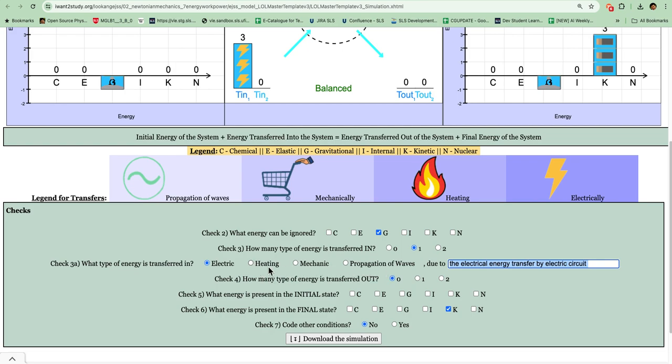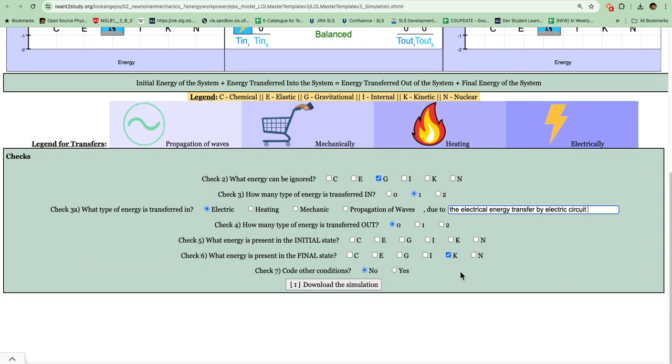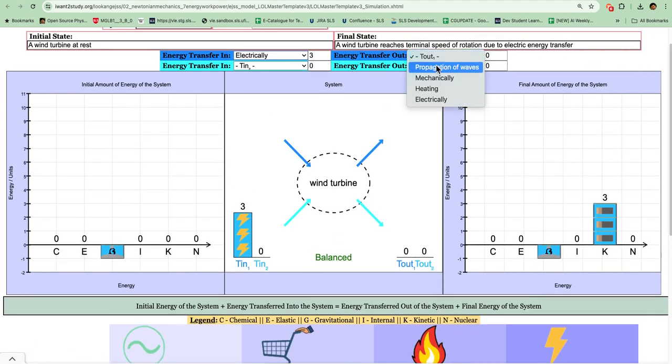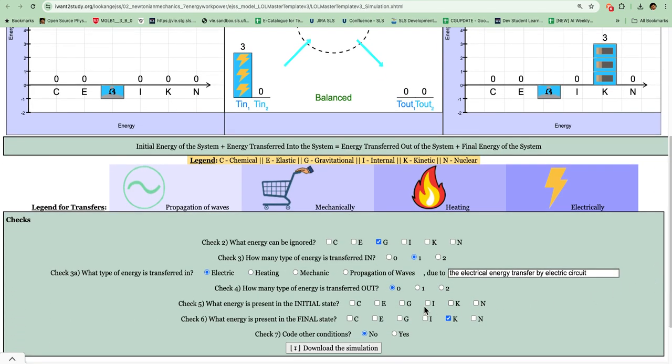Check number four is how many energy types are transferred out. In this case, there are no energy transfers out, so it must be zero. I must select zero so that if students conceptually change something else and move it, this will be marked as wrong. This must be done this way.